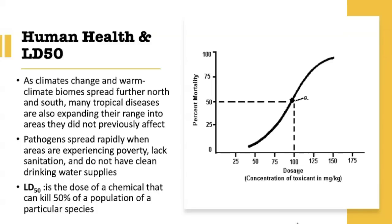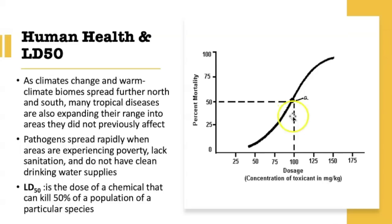Back to the lethal dose 50%, or LD50. LD50 is the dose of a chemical required to kill 50% of a population, used to determine what dosing is safe versus unsafe. On the graph, the x-axis shows dosage of a particular drug or chemical, and the y-axis shows percent mortality from 0 to 100. We follow across from 50% mortality to the dose-response curve and then down to determine the dosage. On this graph, a dosage of 100 milligrams per kilogram is lethal to 50% of the population.